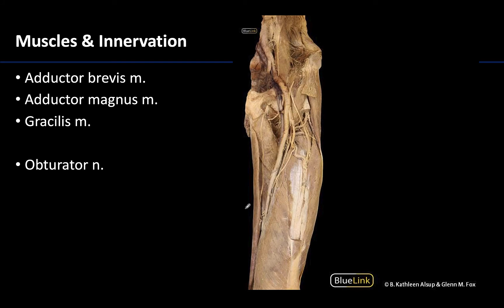Moving to a deeper dissection, the adductor longus has been removed. I know that because here's the gracilis and I see two separate muscles right here. Before getting into the muscles, I want to discuss this nerve running superficially over those deeper muscles. This is a branch of the obturator nerve. The obturator nerve, like the femoral nerve, is a branch of the lumbar plexus, and it is the obturator nerve that will provide efferent or motor innervation to the muscles in this medial compartment.